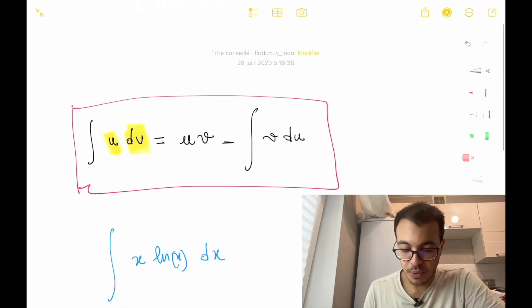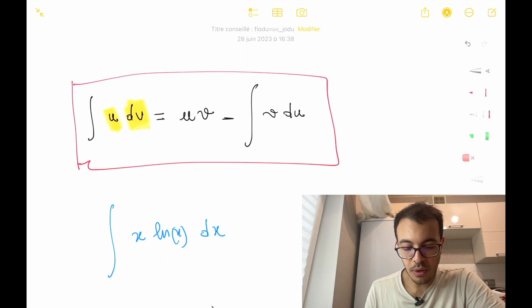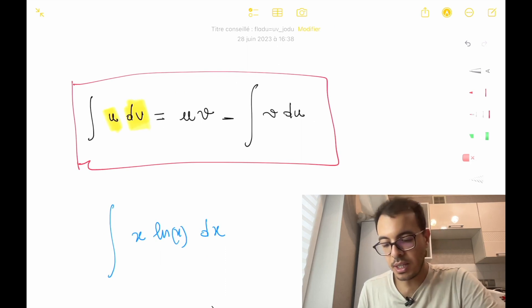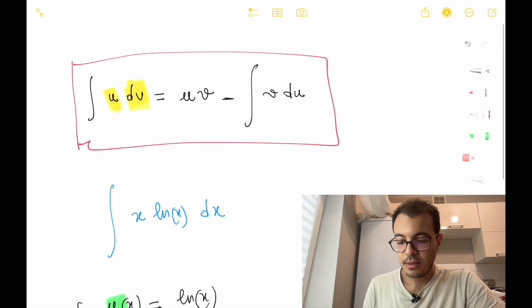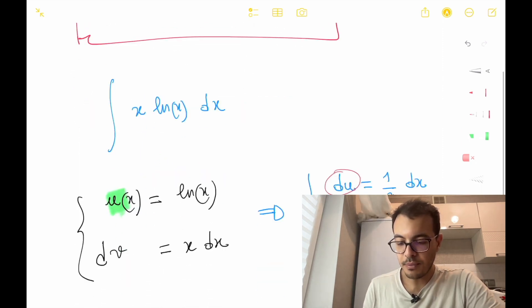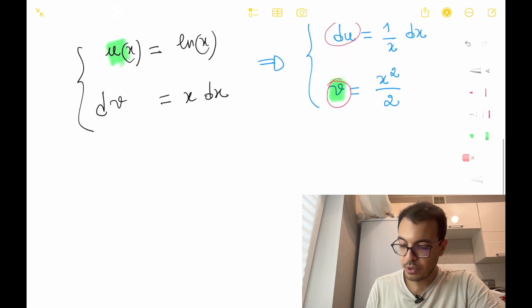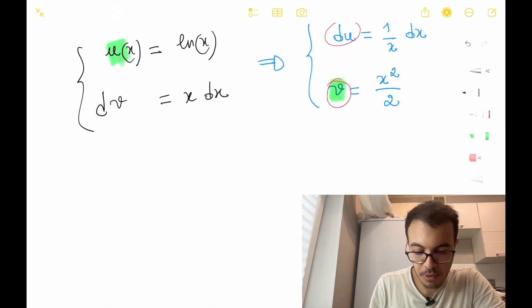The formula is integral of u dv equals u times v minus the integral of v du. Let's apply this formula.